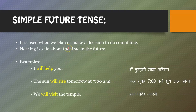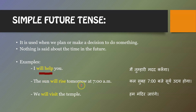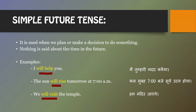Simple future tense is used when we plan or make a decision to do something, and nothing is said about the specific time in the future. For example, 'I will help you,' 'The sun will rise tomorrow at 7 a.m.,' and 'We will visit the temple.' This shows future plans or future decisions to do something.